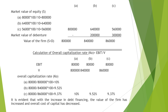The calculated market values of equity shares for the three cases are: rupees 8,00,000 (no debt), rupees 6,40,000 (2 lakh debt), and rupees 5,60,000 (3 lakh debt). The market value of debentures is added to get the total firm value.